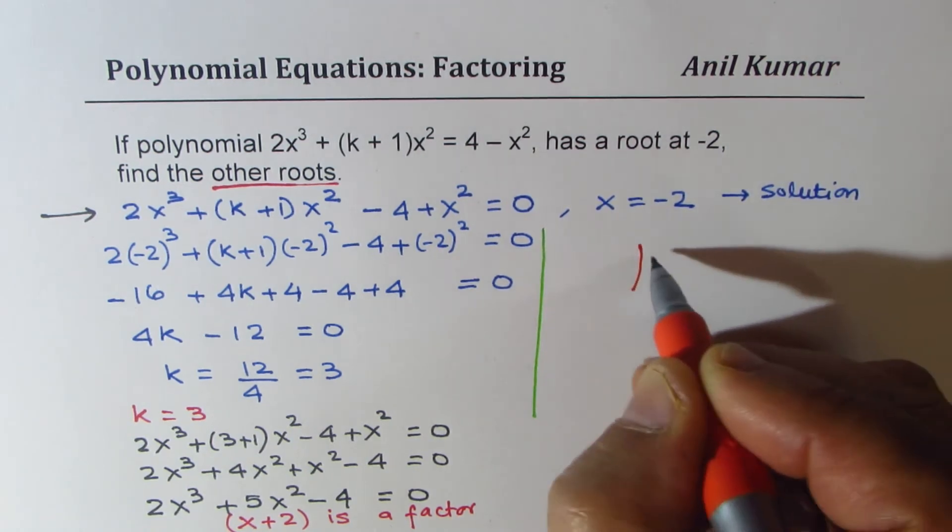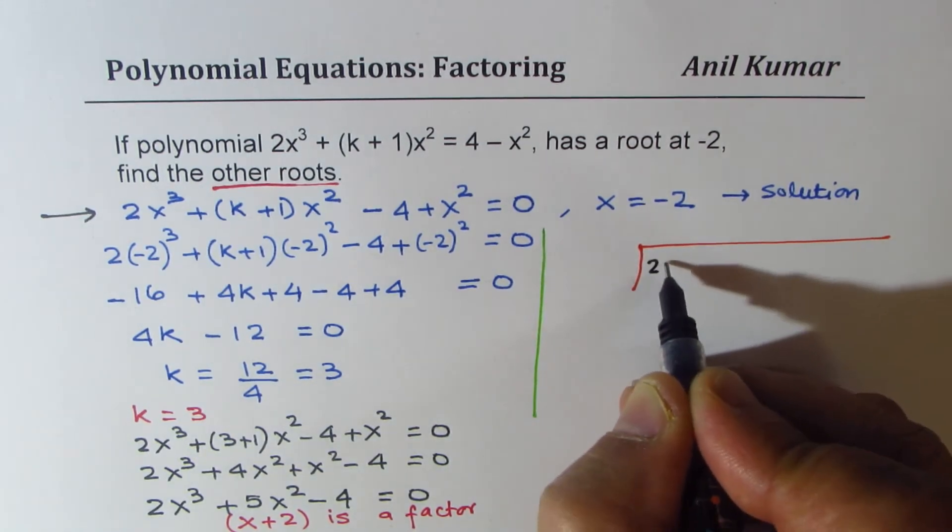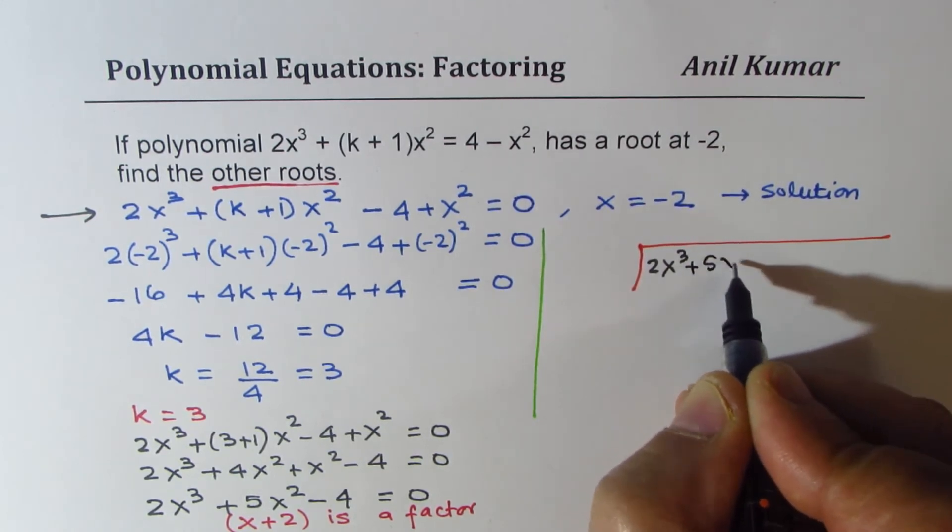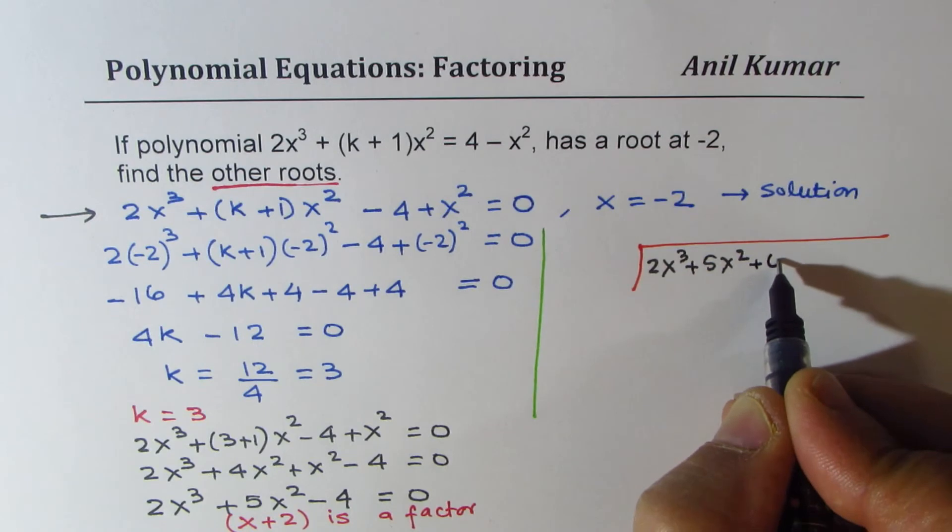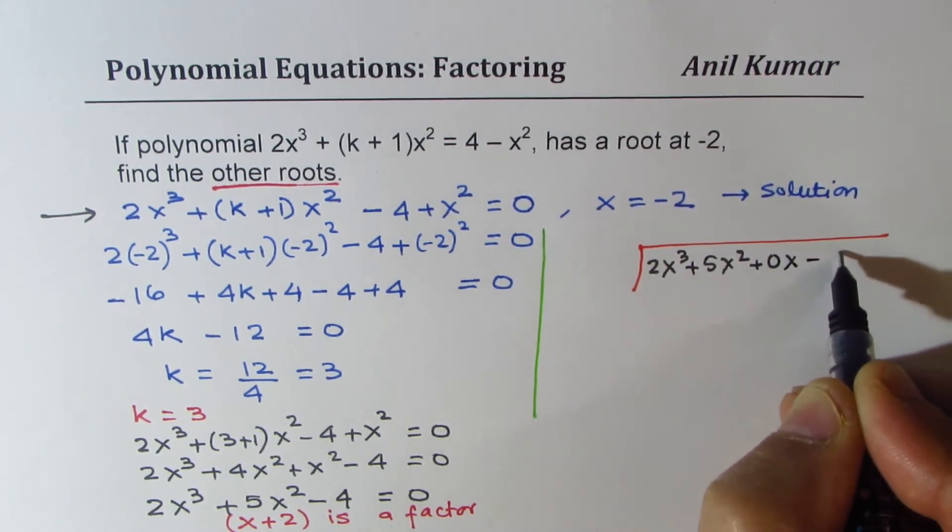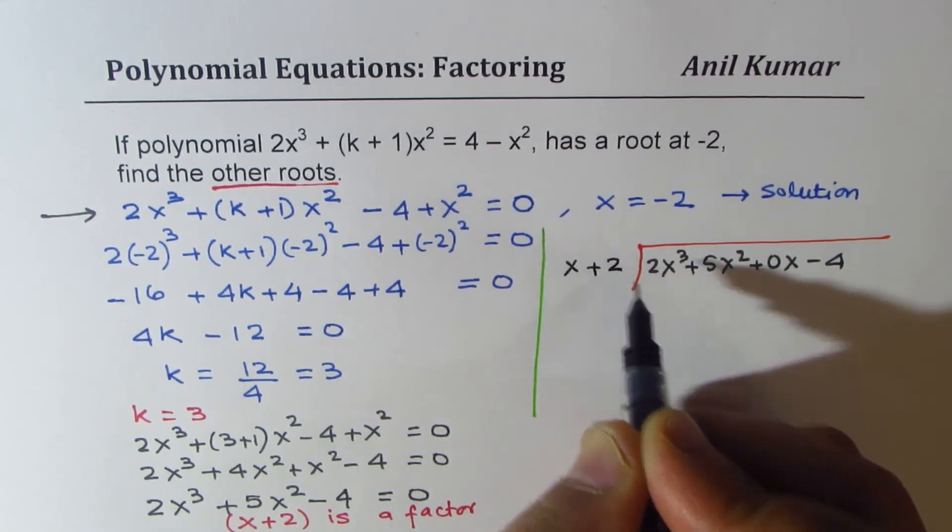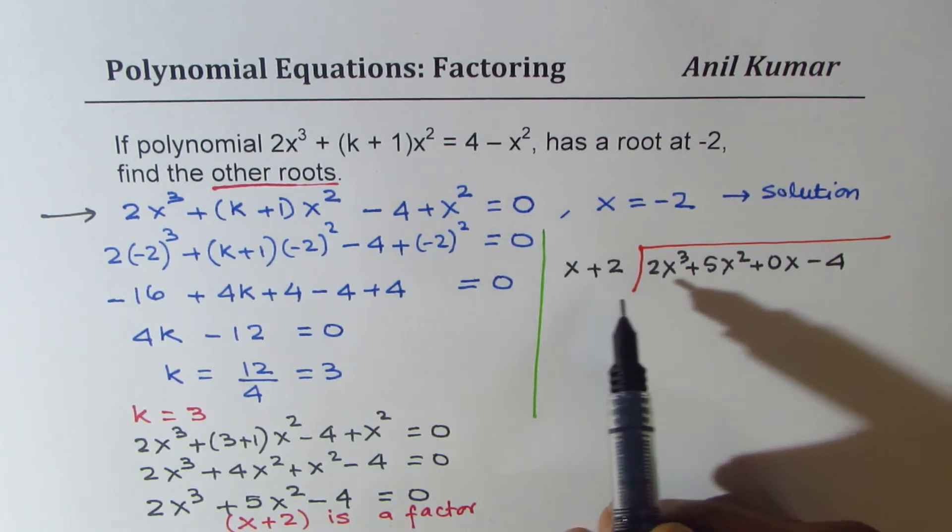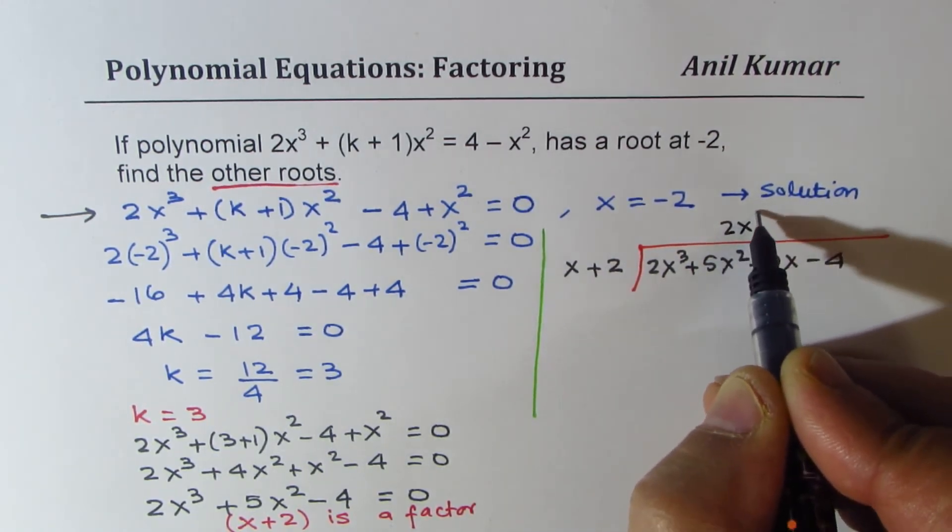So what we'll do here is we'll just divide the expression 2x³ + 5x². Now, x term is missing. So I'll put a placeholder 0x - 4 divided by x + 2, which we know is a factor. So we expect remainder 0. It goes 2 times x².